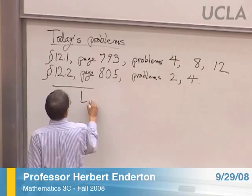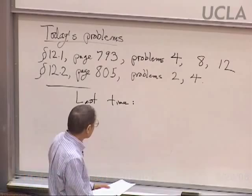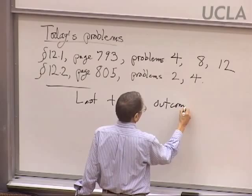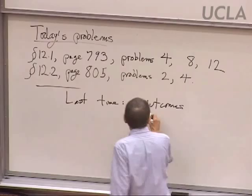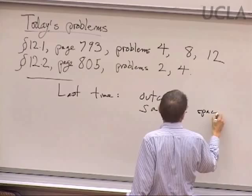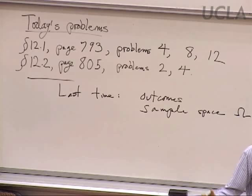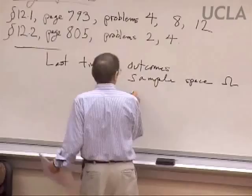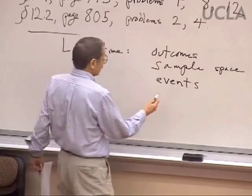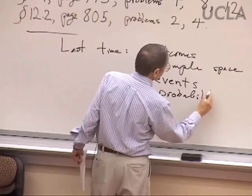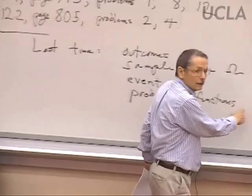Last time we talked about some chronology outcomes of some experiment, like flipping coins or picking patients at random, from the sample space — the set of all outcomes from the experiment or activity in question. Capital Omega will be used for the full space. We talked about what an event is: an event is a set of outcomes, so it's a subset of the sample space. And a little bit about probability functions.